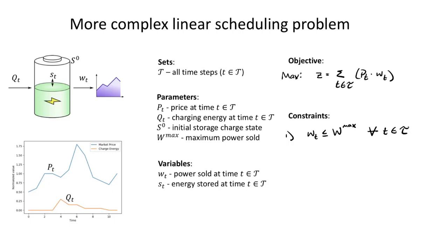We also know that the storage has a certain maximum level to it. We can't exceed the maximum storage charge state. So let's assume that the way that we've set up this battery is that it's fully charged at time zero. Our initial storage charge state is actually the maximum as well. So let's say this is also the maximum.